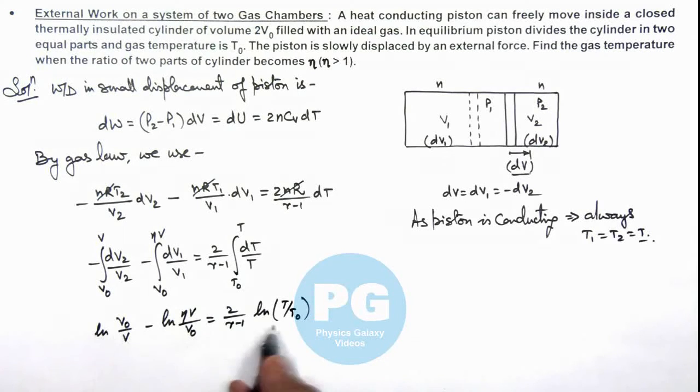Now in this situation, further it gives us ln(V₀²/(ηV²)) is equal to this ln(T/T₀) to whole power 2/(γ-1).